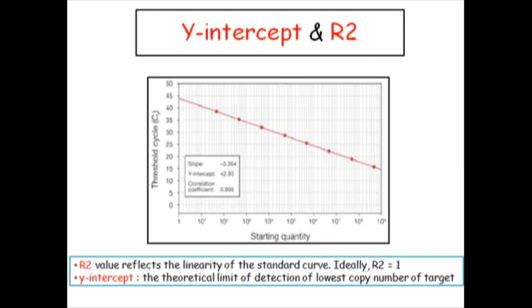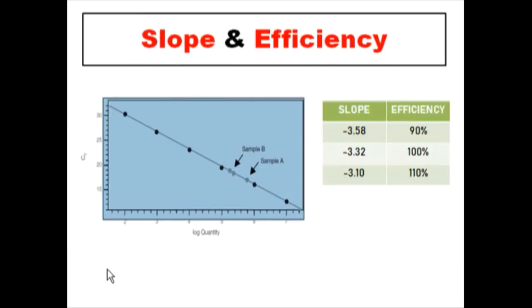And at last, come to the R-square. R-square value reflects the linearity of a standard curve. R-square is basically a measure of how well the data fit to a standard curve. For an ideal reaction, R-square value should be 1, but in practice the maximum R-square value is 0.99. These three parameters - slope, y-intercept, and R-square - are very important for assessing the performance of a real-time PCR.